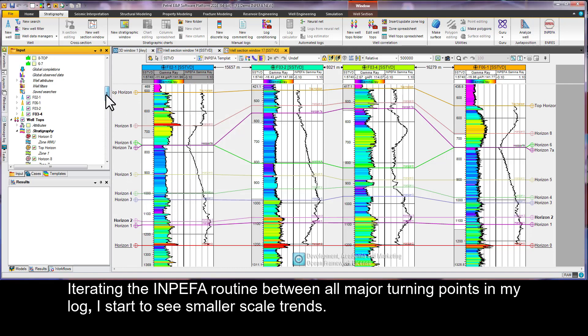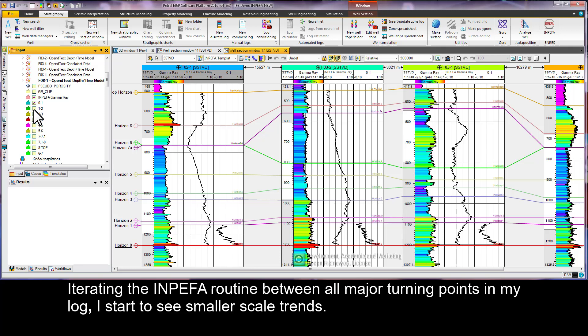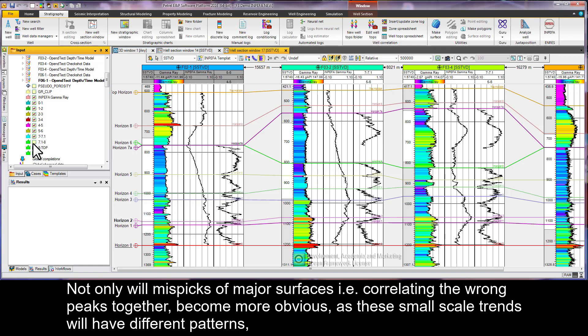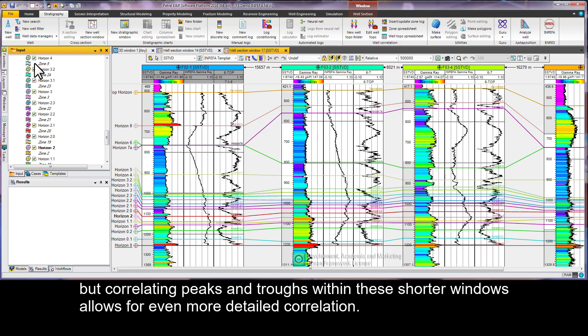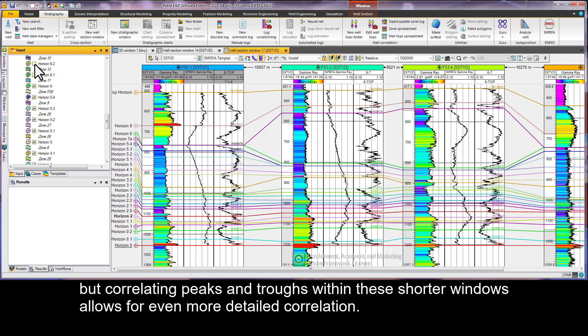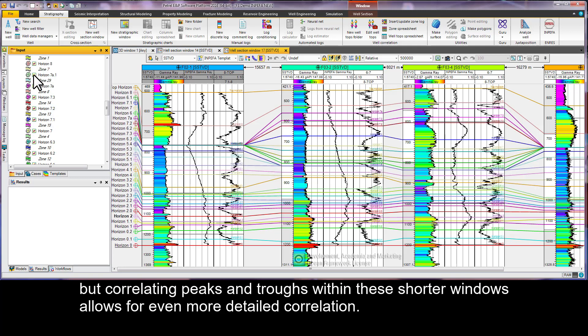Iterating the INPEFA routine between all major turning points in my log, I start to see smaller scale trends. Not only will miss picks of major surfaces (i.e., correlating the wrong peaks together) become more obvious, as these small scale trends will have different patterns, but correlating peaks and troughs within these shorter windows allows for even more detailed correlation.